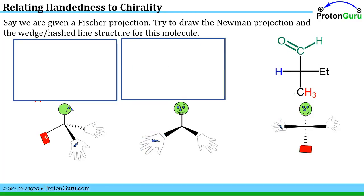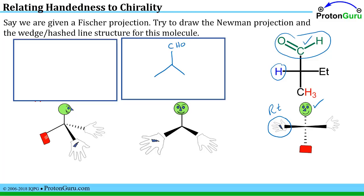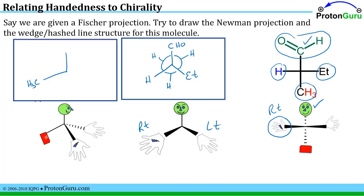For the last permutation — given a Fischer projection, drawing the Newman projection or the line-bond structure — the Fischer projection is the easiest to work with because you immediately know the head is at the top. Drawing the Newman projection: the head is CHO, the right hand is hydrogen, the left hand is an ethyl group, and the feet is a CH3, with only the H's sticking out from behind the circle. For the wedge and hash line structure: the feet is CH3, the head is CHO, the right hand is hydrogen, and the left hand is the ethyl group.